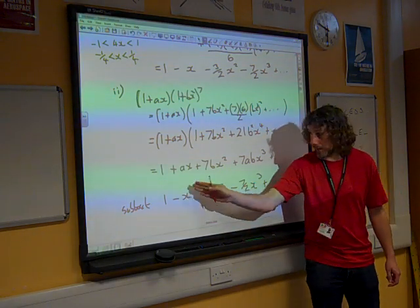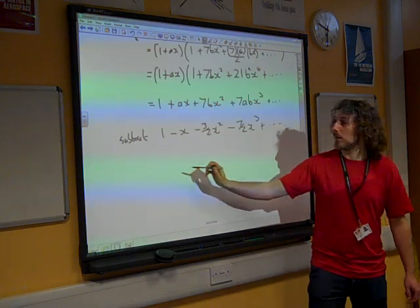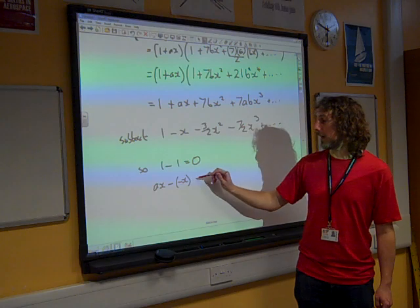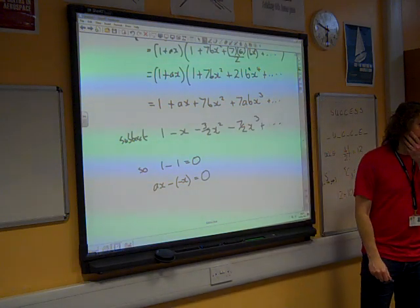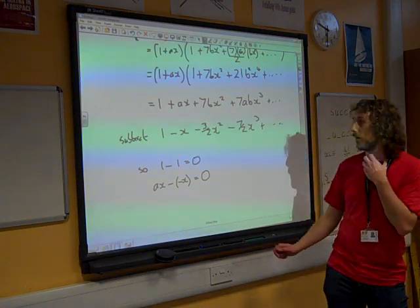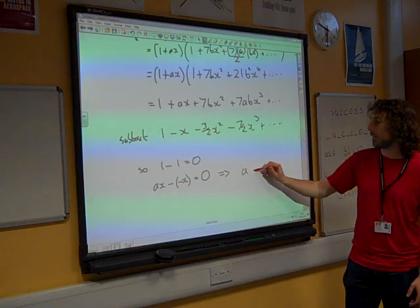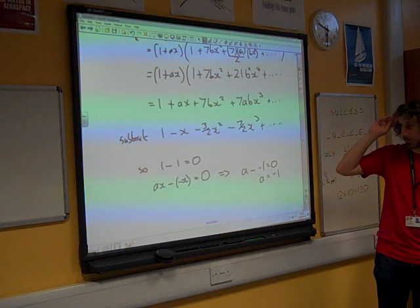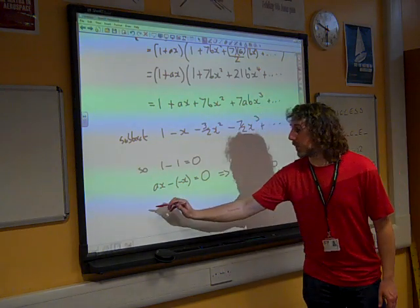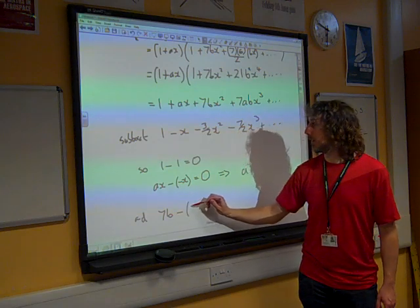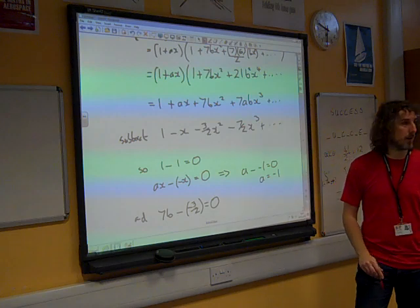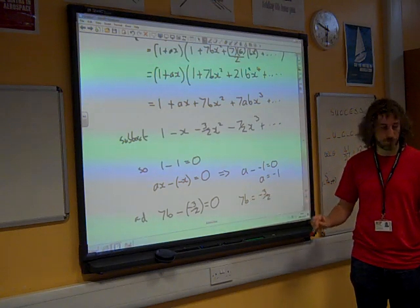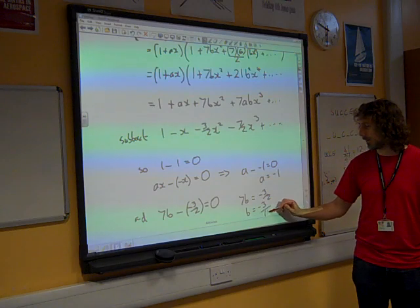And what we do with that is we end up with 0 in all of these three places. So 1 take away 1 equals 0, I think we're fairly happy with that. So we've got ax minus minus x has got to leave us with 0. In fact, it's the coefficient that we're interested in, isn't it? So it's a minus minus 1 is 0. So a must be negative 1. And if we look at the next term as well, we've got 0x squared. So we've got 7b minus minus 3/2 is also 0. Giving us 7b equals minus 3/2. And so b is minus 3 fourteenths.